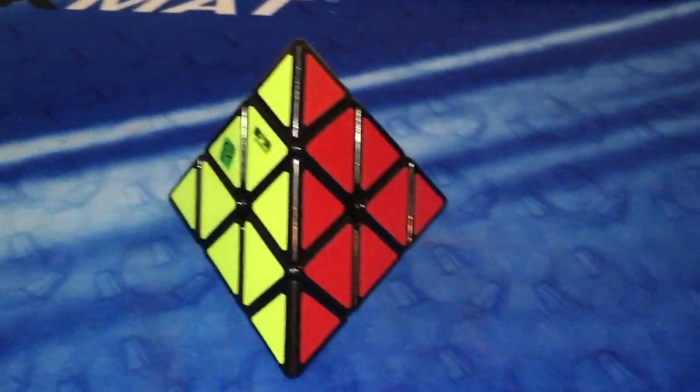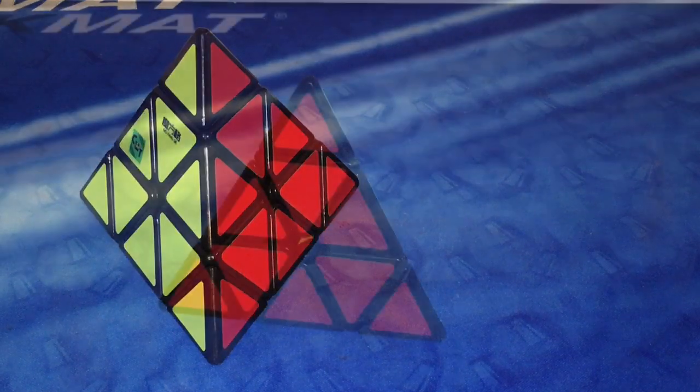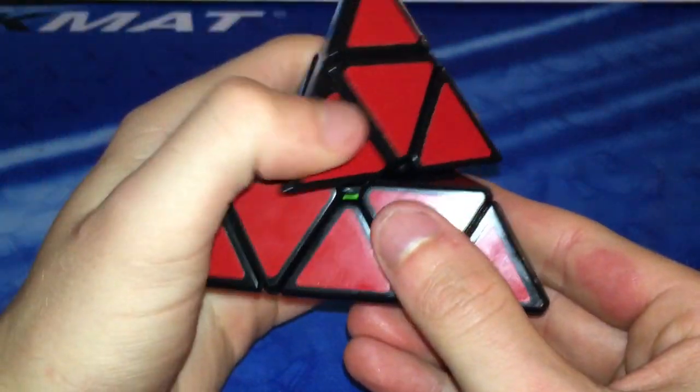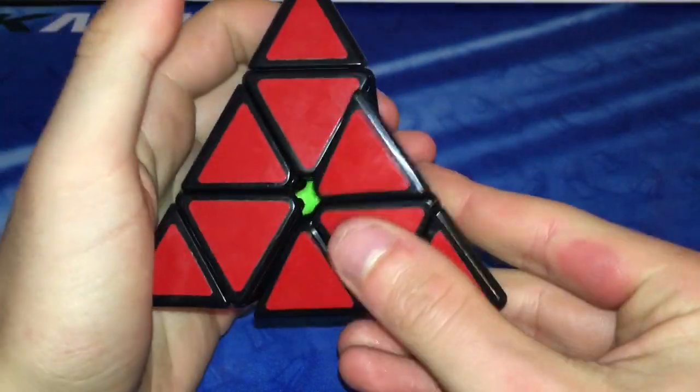And in a similar time period as the Dayan, the Qi Yi pyraminx was produced. This is a very underrated puzzle as well. It came with massive flooring cuts which gave it excellent corner cutting both forward and reverse.